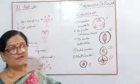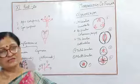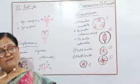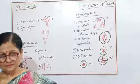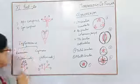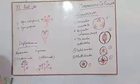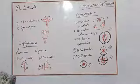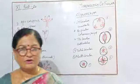Inflorescence is of many types — mainly two types: racemose and cymose. Please remember all these names. Thank you, and God bless you.